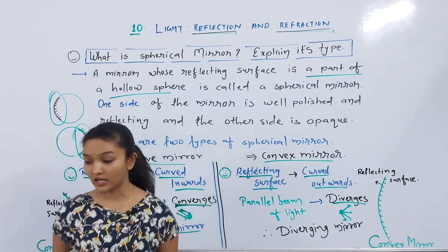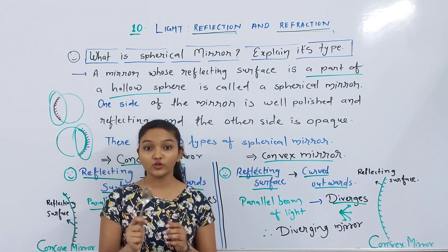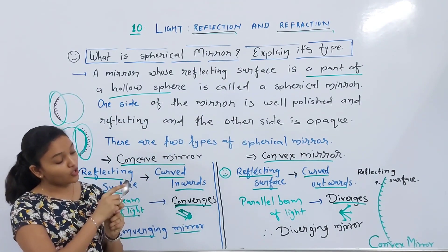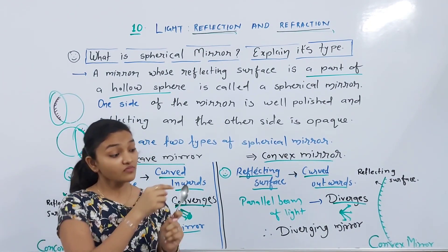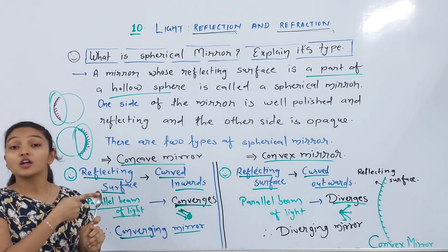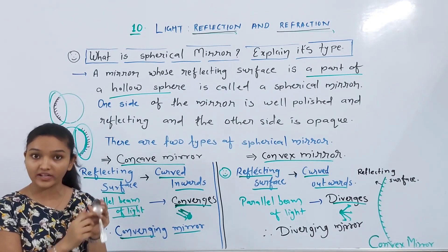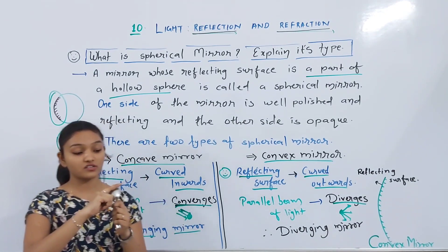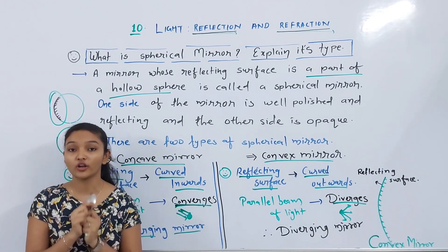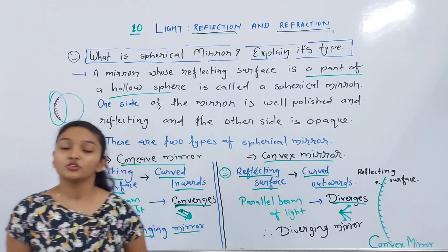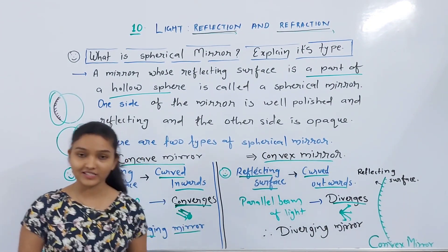A practical example: the spoons in our house act as both types. When the inside surface of a shiny polished spoon is the reflecting surface, it acts as a concave mirror and the outside is opaque. When the outer shiny surface is reflecting and the inside is rough, it acts as a convex mirror.